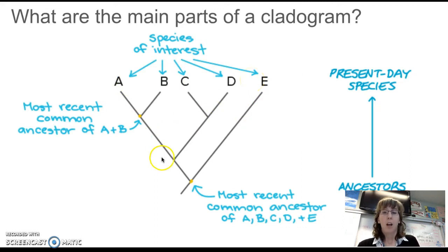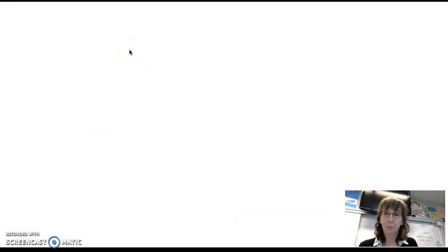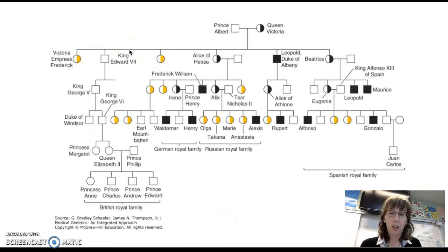You can see different branching points and you can see which ones are more closely related. For example, A is most closely related to B and least closely related to E. So you should be able to identify the points on these cladograms and to be able to understand relationships.